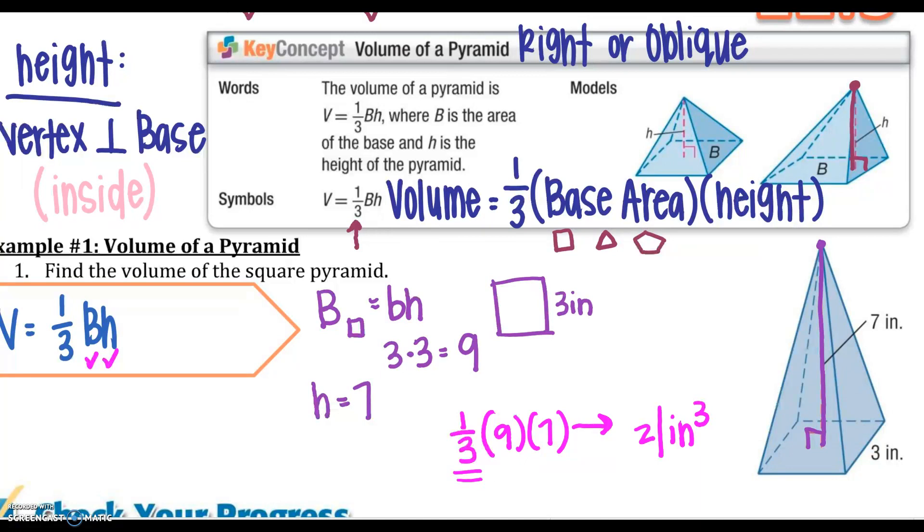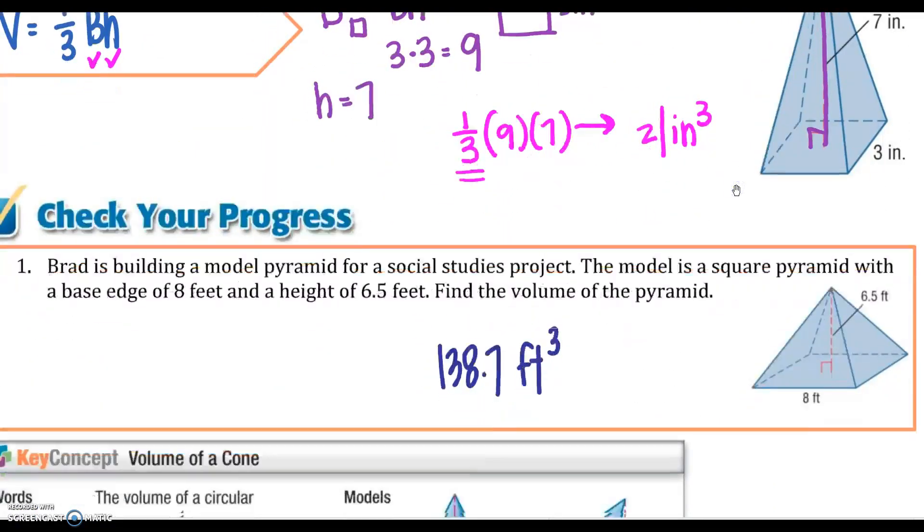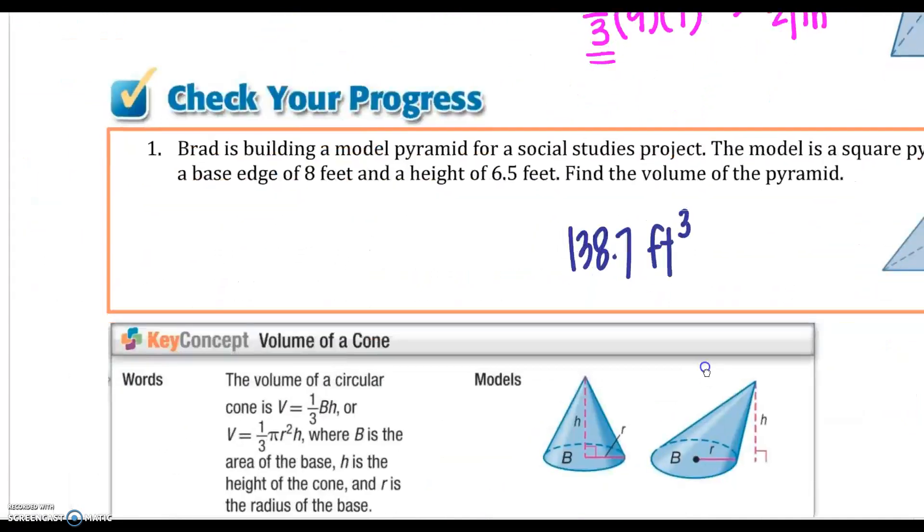If you would possibly fill up this square pyramid with water, and you had the same, a square prism or a cube, that had the same base area, 3 of these would equal 1 of your prisms. That would be where you get the 1 third at. Go ahead and stop this video and do your check your progress. Make sure you show all of your work to get this answer. Don't just put the answer down.